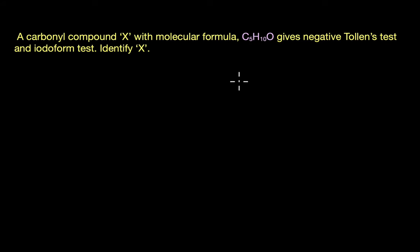By now you're familiar with the various oxidation reactions of aldehydes and ketones, so in this video we're going to look at a question on the same. The question says a carbonyl compound X with molecular formula C5H10O gives negative Tollens test and iodoform test.